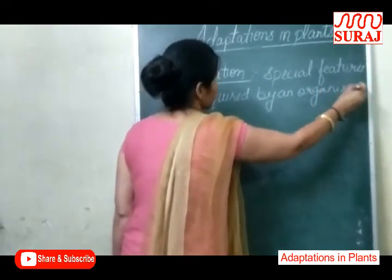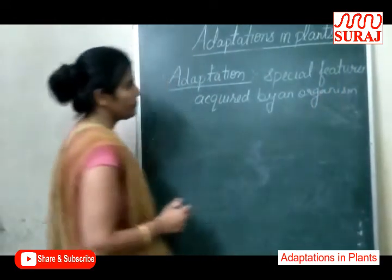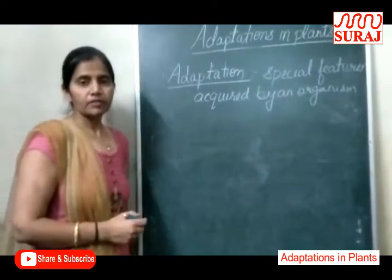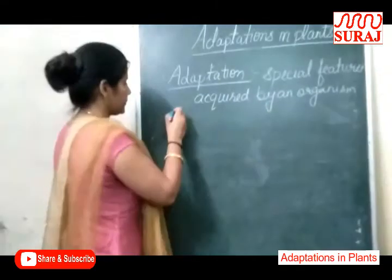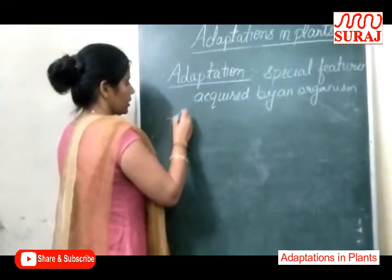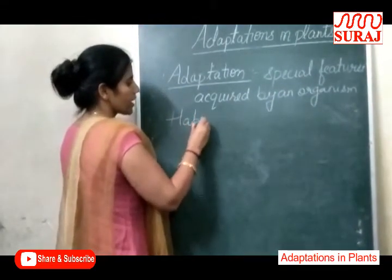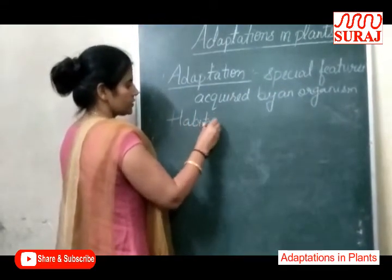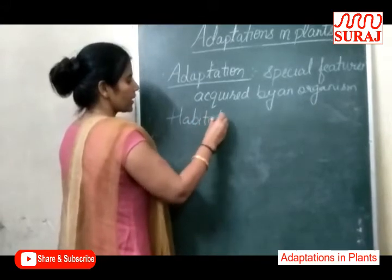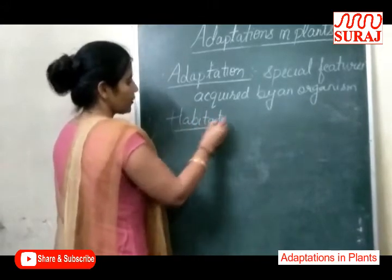Next, Habitat. What is Habitat? The place where an organism lives is called Habitat. Wo jagah jahan pe ek organism rehta hai ya phir grow karta hai.